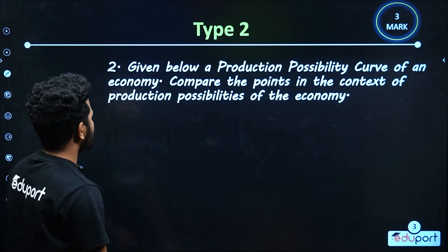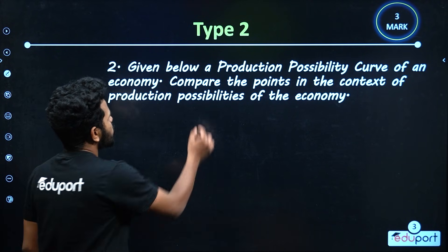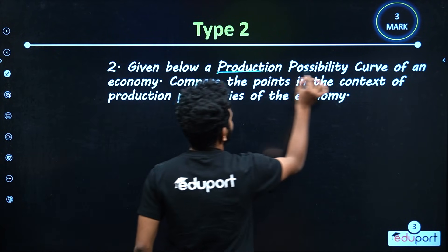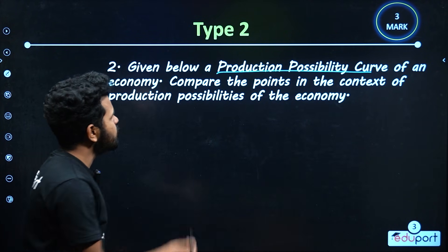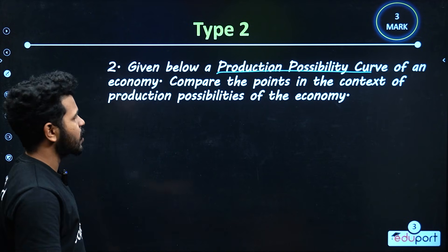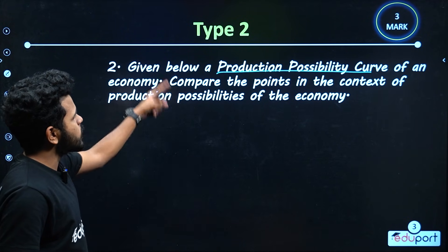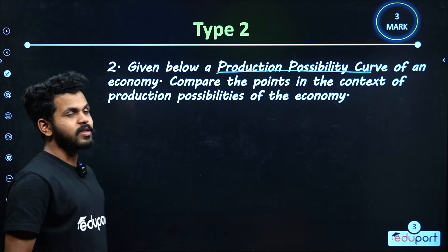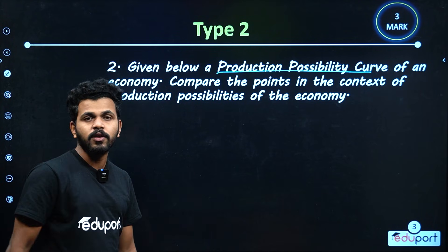This is a production possibility. Given below is a production possibility of an economy — compare the points in the context of production possibility of the economy.